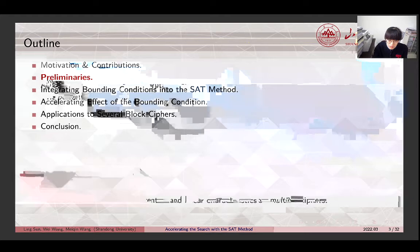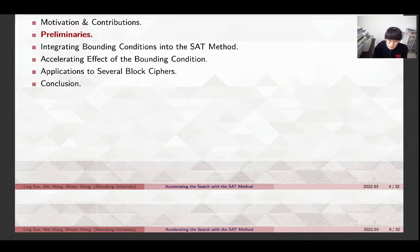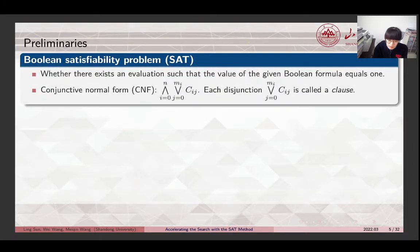Now, we briefly recall some necessary preliminaries. The Boolean satisfiability problem is the problem of determining whether there exists an evaluation for the binary variables such that the value of the given Boolean formula equals 1. Every Boolean formula can be converted into an equivalent formula in conjunctive normal form. Each disjunction is called a clause.